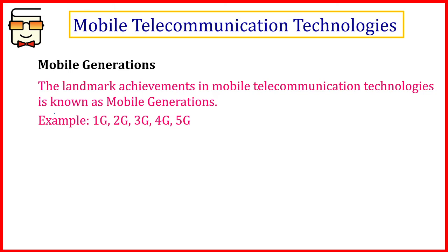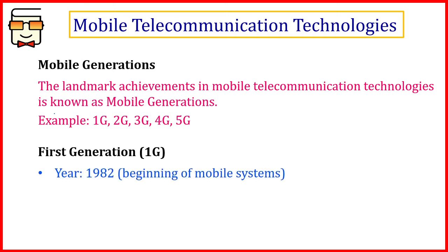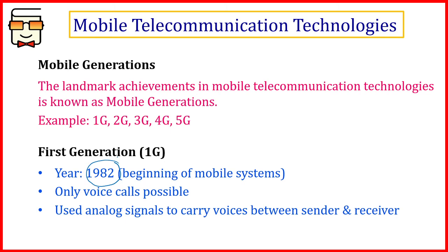Let's start with the first generation, 1G. This was the time when we actually began with mobile systems, during the year 1982. At that time, only voice calls were possible — no internet, no video calls. Analog signals were used for transmitting voice data. There was no digitization; analog signals carried voices between the sender and the receiver.